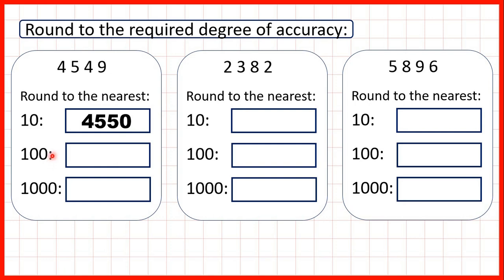Now, let's try rounding to the nearest hundred. We can find our hundreds digit and underline the digit to the right. This time, we have a four, and remember, if we have four or less, we round down. When we round down, the digit that we've circled stays the same. Digits to the left always stay the same, and digits to the right of what we've circled turn into zeros, so we get four thousand, five hundred.